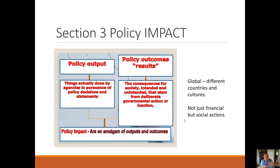The policy impact is a result of two things. First, what are the actual actions that a governing body takes? And the second is the result or consequence of those — they can be intended or unintended. This is not a pure mathematical exercise. The impact is really the output of what the agency or body is doing, and then there are the results. So we do want to distinguish them as we move forward.